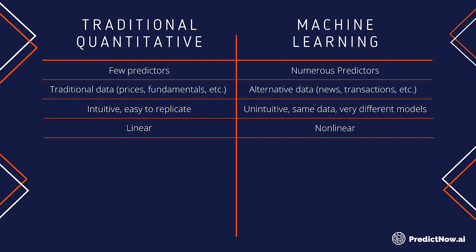Another problem with the traditional quant model is that it is very hard to assign a probability of success to a trade. No matter whether you build a linear factor model or a model based on simple trading rules, it can only tell you that historically this strategy has a Sharpe ratio of one, a Sharpe ratio of two, or historically a 75% chance of success, or a winning ratio of 61%. But that is in aggregate — just a summary statistic. On average you get 61% chance of success. But what about today's trade? Is today's trade also 61% chance of success, or only 50%? How do you assess the probability of success of today's trade without extra variables?